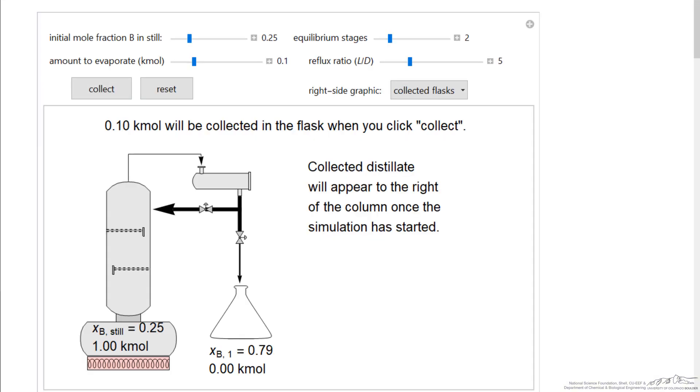So here's the simulation. Let's increase the number of equilibrium stages. And then when we evaporate a tenth of a mole, we do that by hitting collect. And we see we're collecting the first batch.